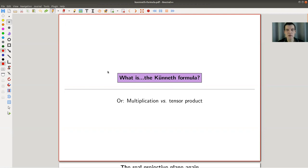Okay, welcome everyone to my continuation of what is algebraic topology. Today's topic is the so-called Künneth formula, which is secretly a theorem in algebra, not so much in topology. It's about how the tensor product of chain complexes behaves with respect to its homology.